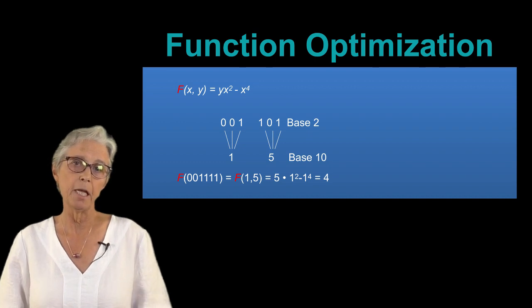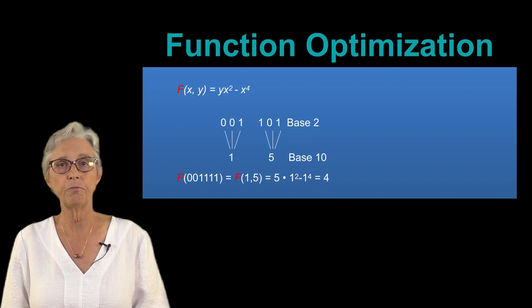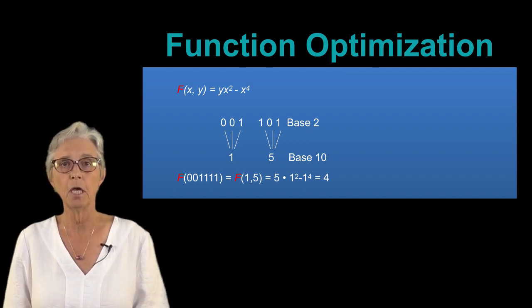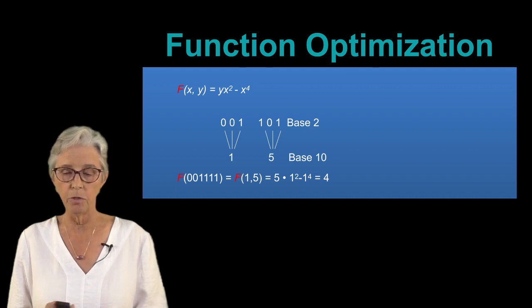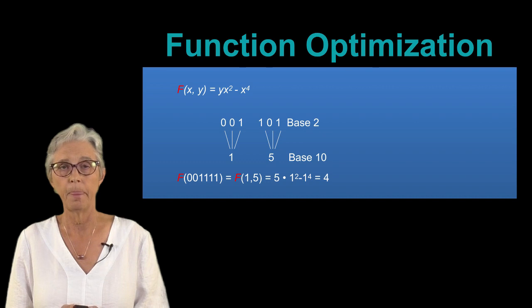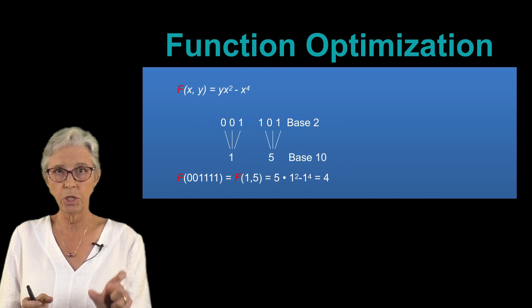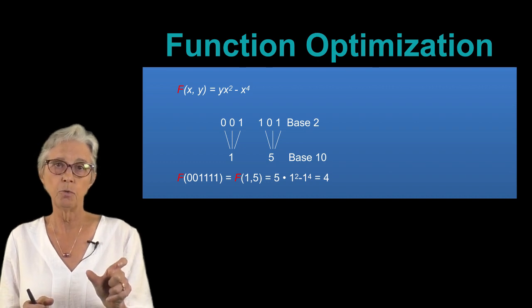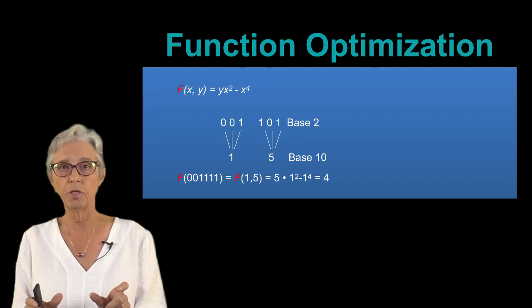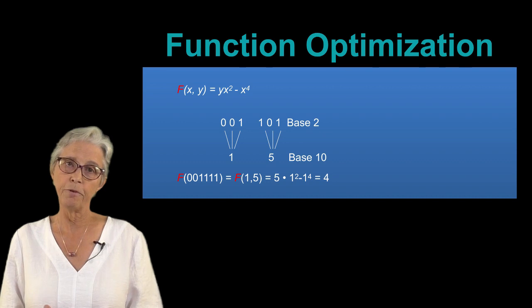Let's just go into a little bit more detail about how that works. Here is an example of such a function and it's not trivial to analyze this mathematically, but suppose we want to find the x and y values for this function that produce the maximum f(x,y). To do that we take our bit strings and conceptually think of the first half of this string as being a representation of the value of x and the second half of the string as being a representation of the value of y.